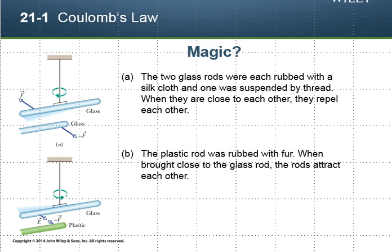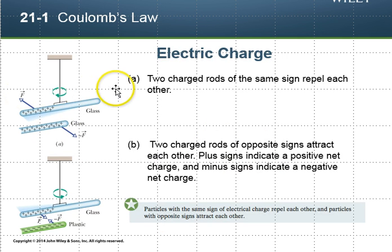So that happens because when we rub the glass rods with fur, we're actually stripping electrons off of it, so the glass becomes positively charged. What we have are positive charges and positive charges repel each other.